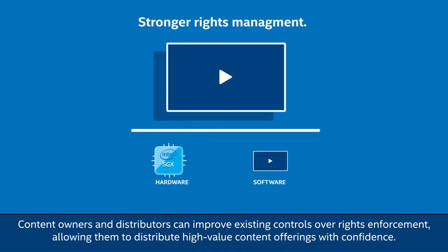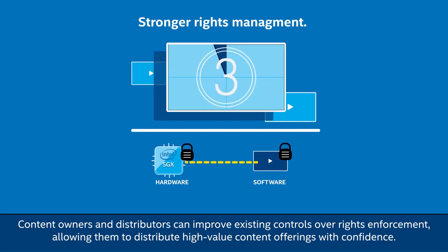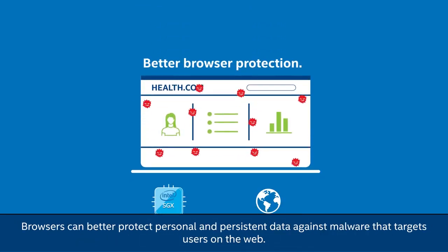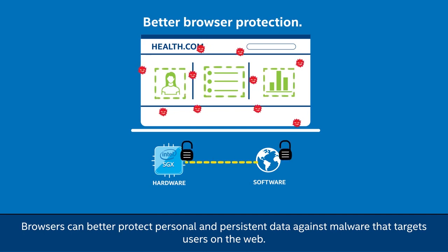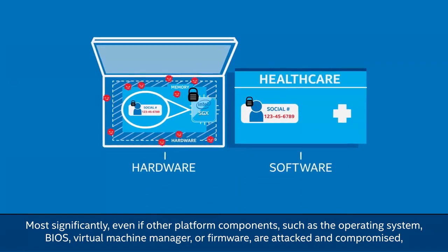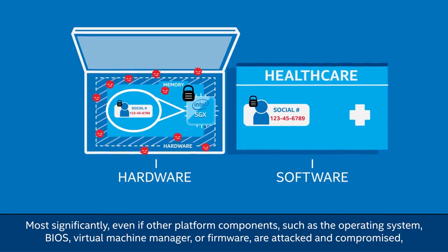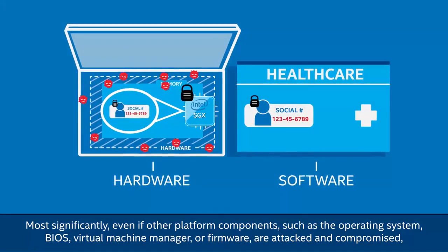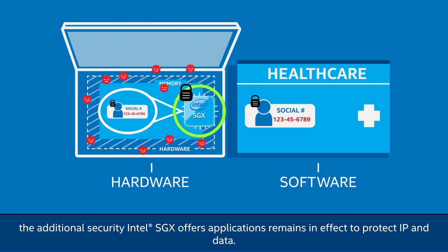Content owners and distributors can improve existing controls over rights enforcement, allowing them to distribute high-value content offerings with confidence. Browsers can better protect personal and persistent data against malware that targets users on the web. Most significantly, even if other platform components such as the operating system, BIOS, Virtual Machine Manager, or firmware are attacked and compromised, the additional security Intel SGX offers applications remains in effect to protect IP and data.